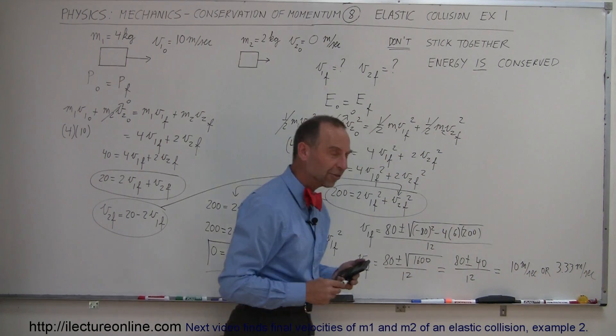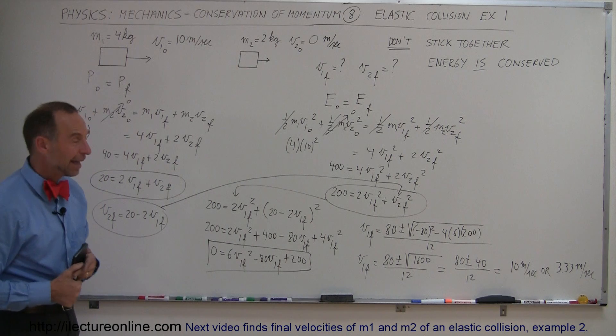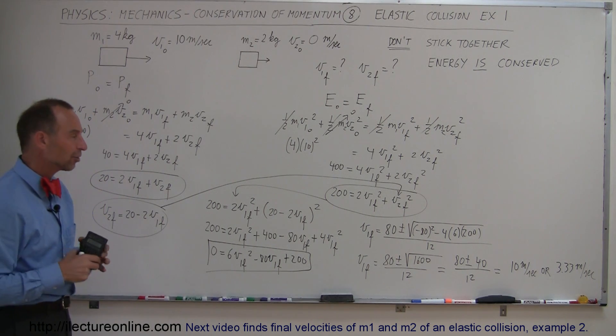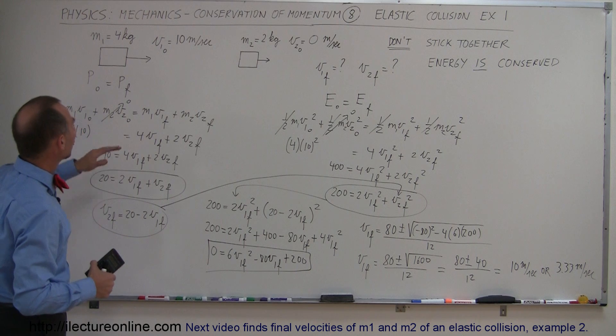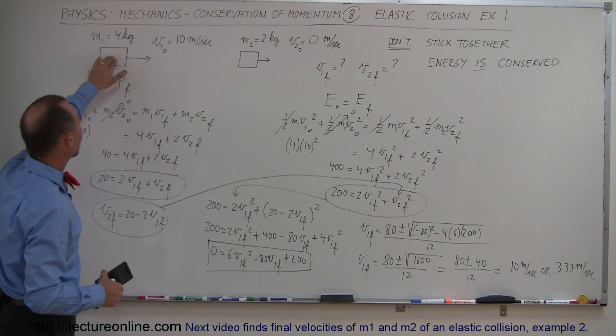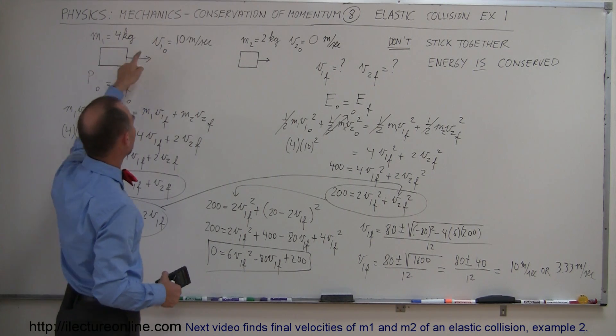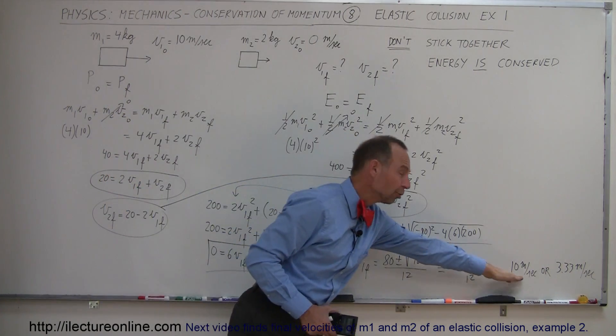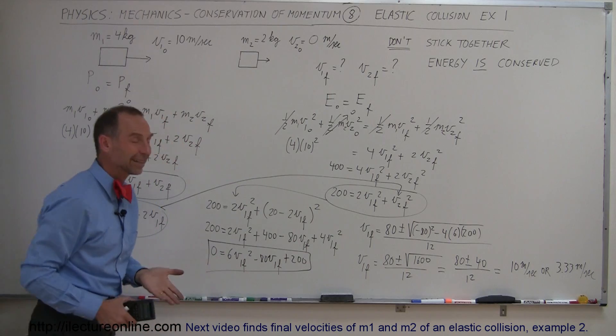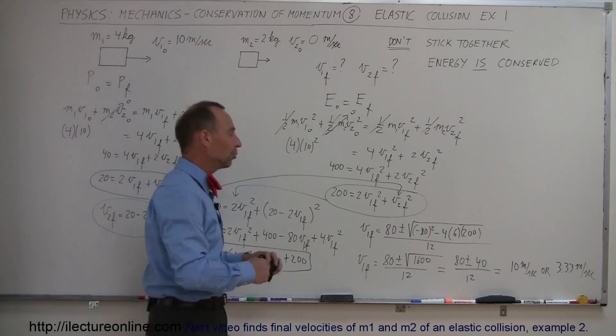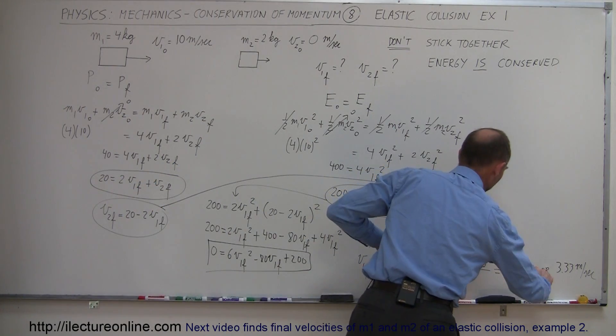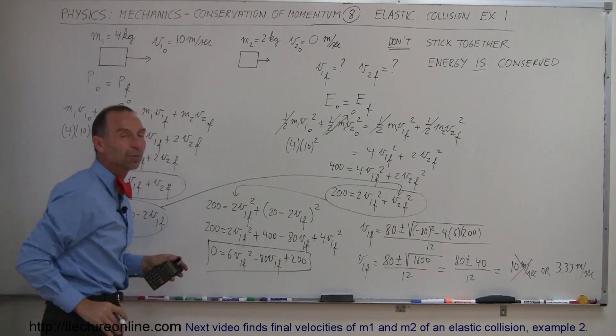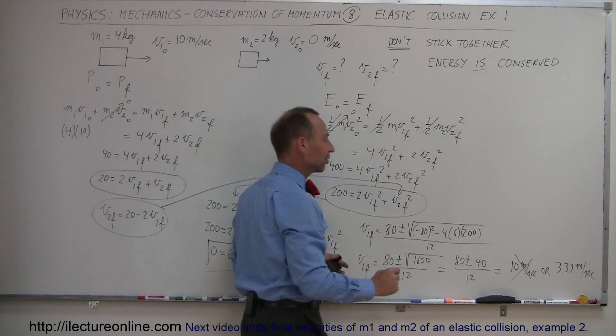So these are the possible velocities for V1 after the collision, V1 final. So which one of those two answers is plausible, which one is not? So here we have mass 1 with initial velocity of 10 meters per second colliding with this mass right here, and then presumably continuing at 10 meters per second. Not possible. So this would be an impossible answer. The only other possibility is that it collides and therefore slows down to 3.33 meters per second, and that seems a lot more plausible.